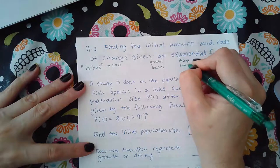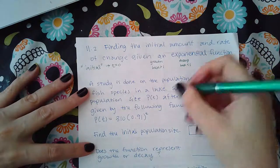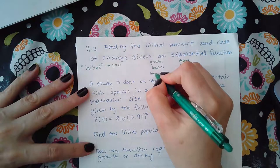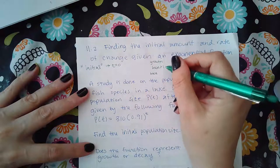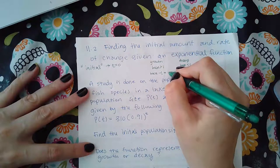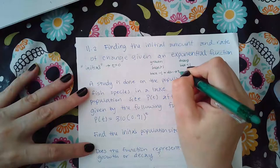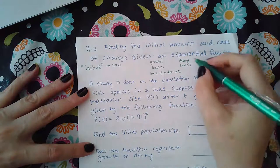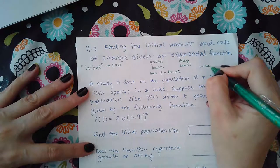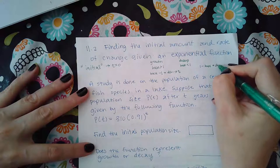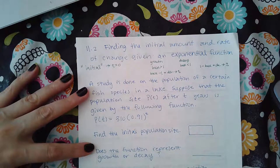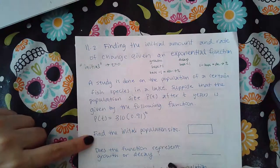And then how do you find out what that is? You will take the base. If it's greater than one, then you'll subtract one and you'll get a decimal and then convert it to a percent. If you have a decay, then you're going to do one minus base, that will give you a decimal, and then you're going to convert that into a percent.